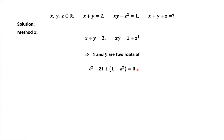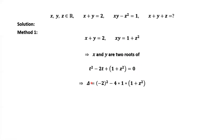By the relationship between the two roots and the coefficients of a quadratic equation: x plus y equals 2, and x times y equals 1 plus z squared. For this quadratic equation to have real roots, the discriminant delta equals b squared minus 4ac equals negative 2 squared minus 4 times 1 times (1 plus z squared).